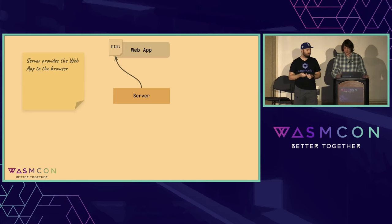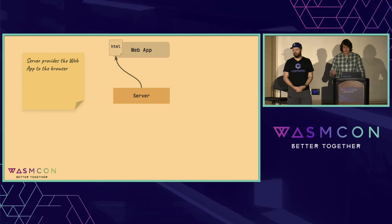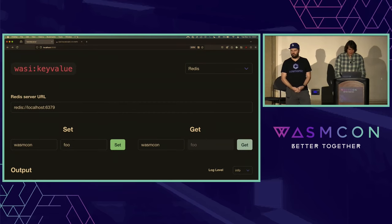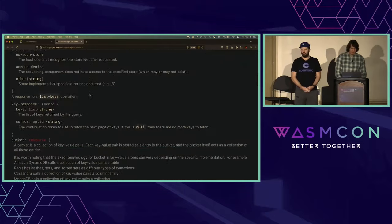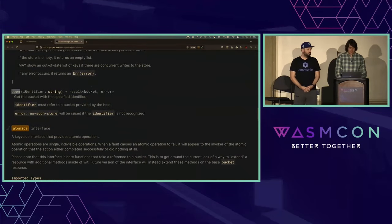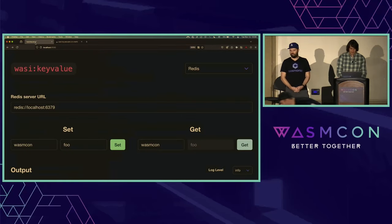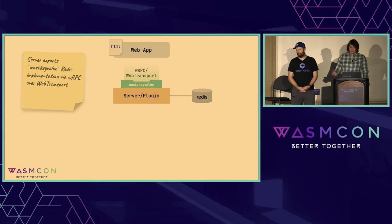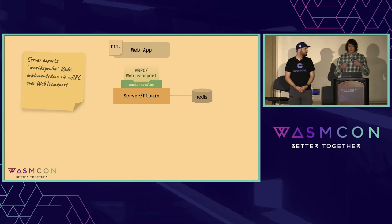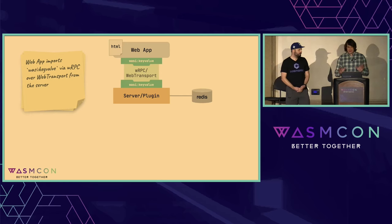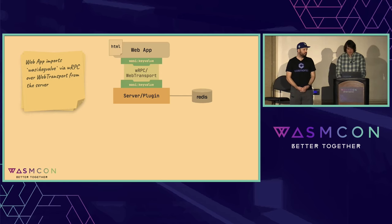We'll start with a simple server — it's going to be a Rust web server that serves some web app to the browser. We're going to be dealing with WASI key value. We're going to use a bucket resource, be able to open it from our browser, and get and set some key — the things you'd normally expect from a key value interface. Apart from serving that web page, the server also acts as a plug-in for WRPC. It will connect to Redis and export WASI key value using WRPC over Web Transport.